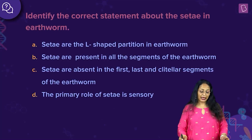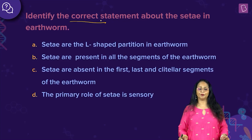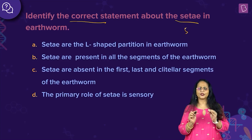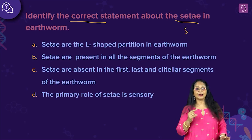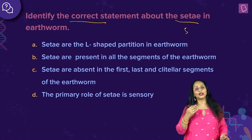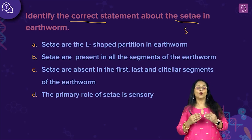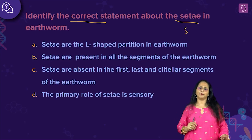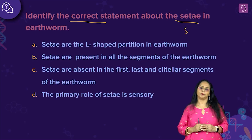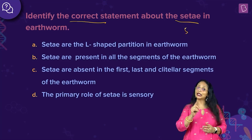Now let us look at a new question: identify the correct statement about the setae in earthworm. What are setae? Setae are small S-shaped structures embedded in the epidermal region of the earthworm. We know earthworm is a metameric animal — the body is segmented externally and internally with linear repetition of organs. Except for the first, the last, and the clitular segments — the thick glandular tissue between the 14th and 16th segment — you find setae everywhere. The main purpose of setae is locomotion: by the simple extension and retraction, the earthworm is able to move.